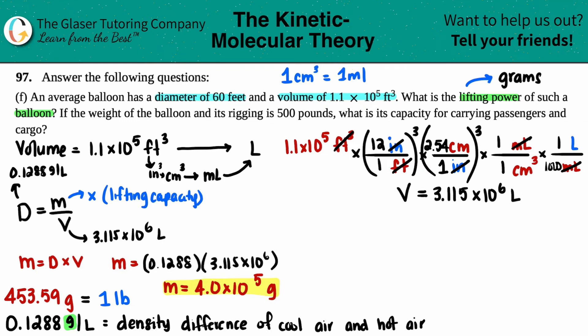Now the second question. What about that 60 feet diameter? Nothing - they gave us the volume. Sometimes they give you more information than you need. The next part says: if the weight of the balloon and its rigging is 500 pounds, what is the capacity for carrying passengers and cargo?